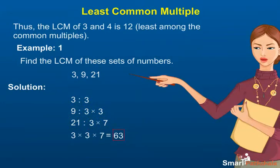Multiply each factor the greatest number of times it occurs in any of the numbers. 9 has 2 threes and 21 has 1 seven. So, we multiply 3 two times and 7 once. This gives us 63,